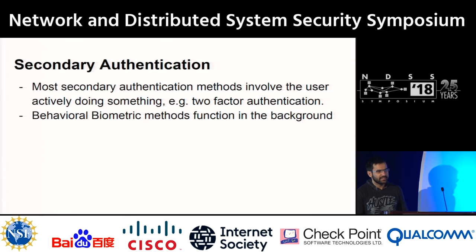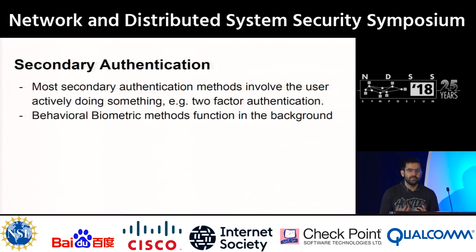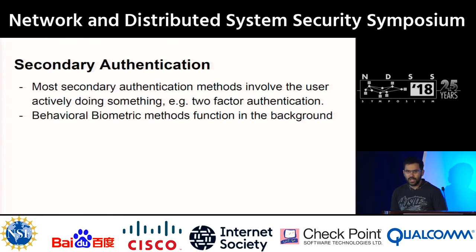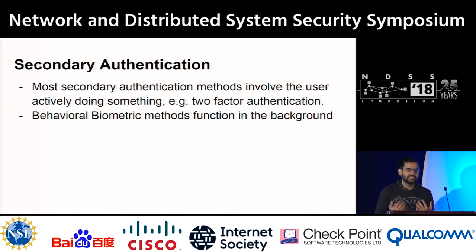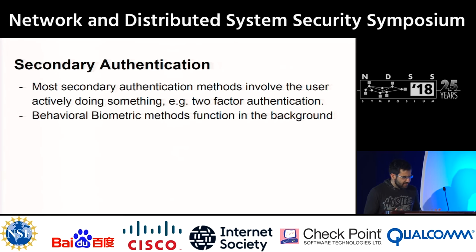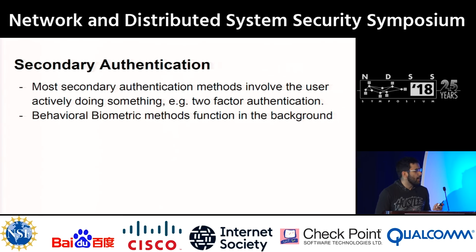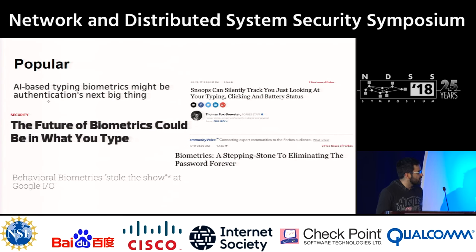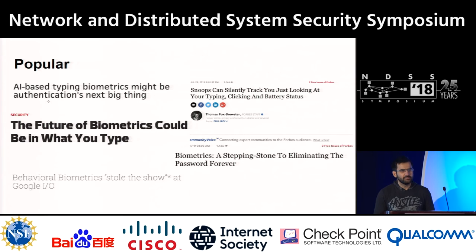Secondary authentication methods such as two-factor authentication involve the user doing additional work — you always need your mobile with you. It would be amazing if these checks happened in the background: while you typed your password, the browser could perform checks against a profile based on your previous typing patterns. That is the promise of behavioral biometrics, and it's become popular recently — there have been startups, banks using it, and Google has promised similar systems.